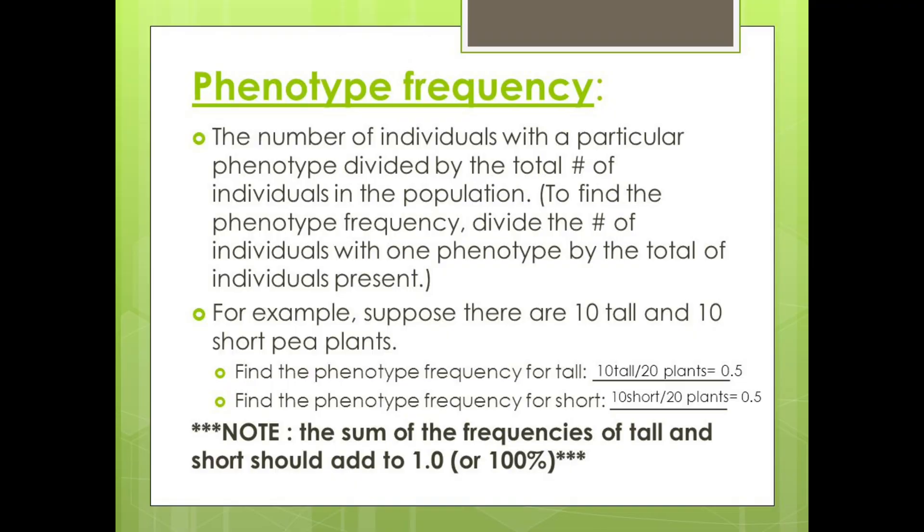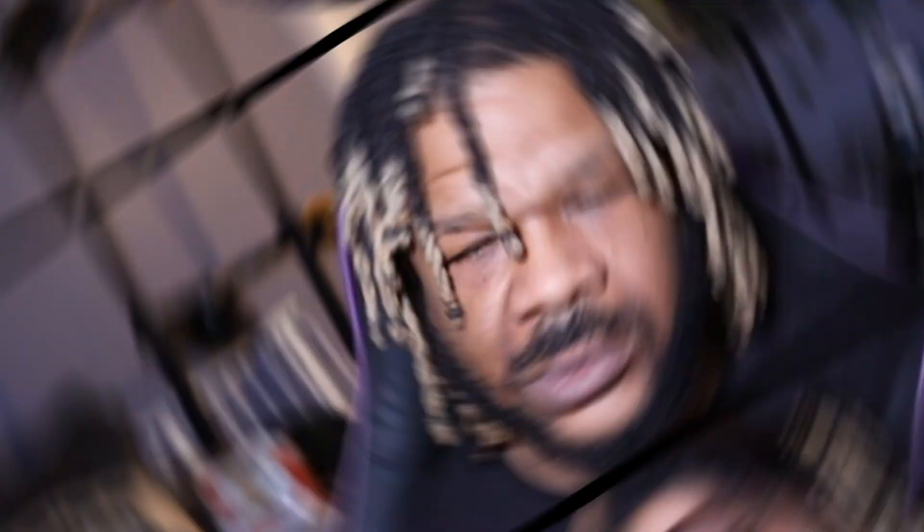We know phenotype is basically any observable traits that have been a result of your genotype affected by the environment. Now, phenotype frequency — not to be confused with allelic frequency or allele frequency — is just that simple: how many times a particular phenotype shows up in the population. Continuing with our eye color example, phenotype frequency would be how many times blue eyes shows up compared to how many times brown eyes show up.